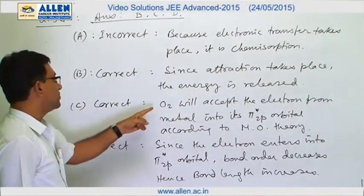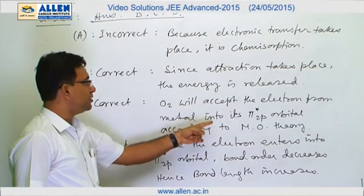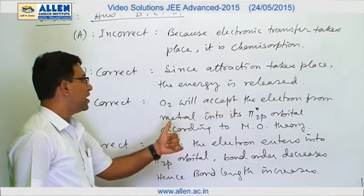Option C is correct. O2 will accept the electron from metal into its pi star 2p orbital according to the MO theory.